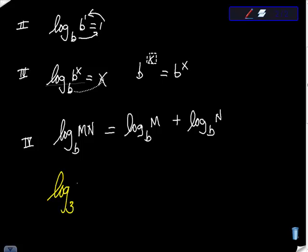Log base 3 of 9 is equal to 2, because 3 squared is 9. So look at this. We're suggesting here that I can break this into something different. So what if I took log base 3 of 3 times 3? Well, 3 times 3 is 9.